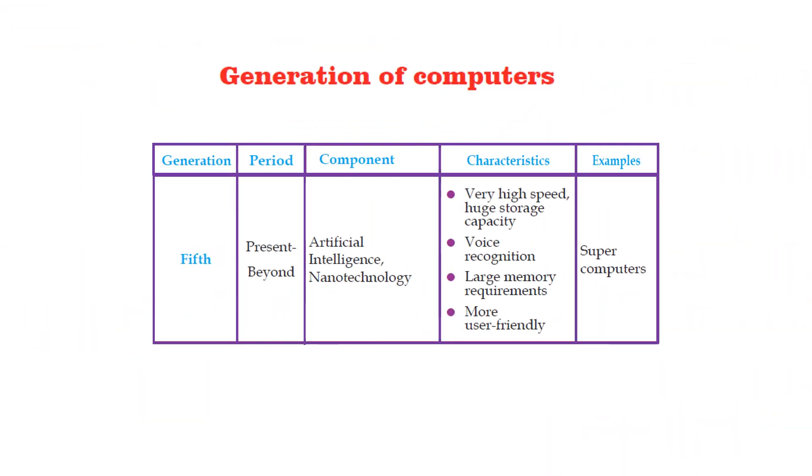Let's talk about the fifth generation computers. The period under discussion is present and beyond. The component used: artificial intelligence and nanotechnology. Characteristic features: very high speed, huge storage capacity, voice recognition, large memory requirement and more user friendly. Examples of fifth generation computers are the supercomputers.